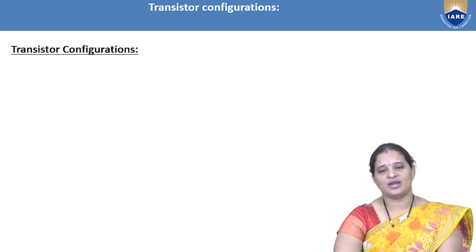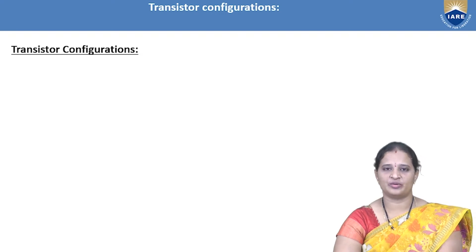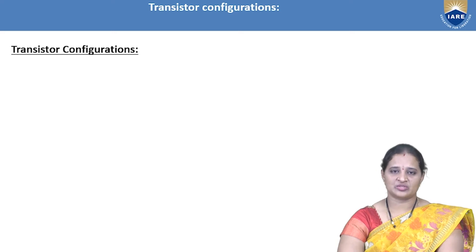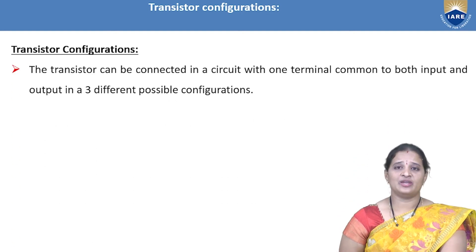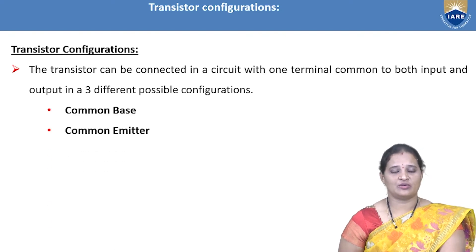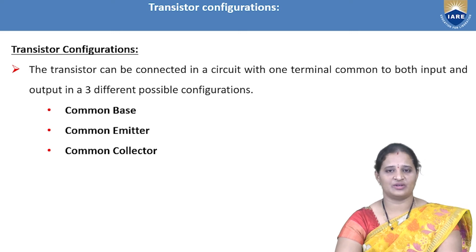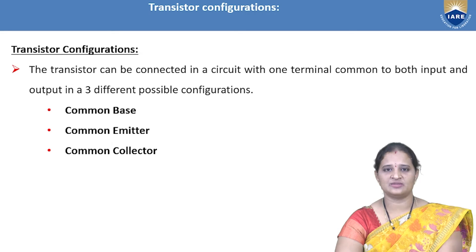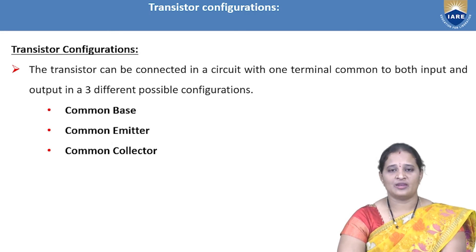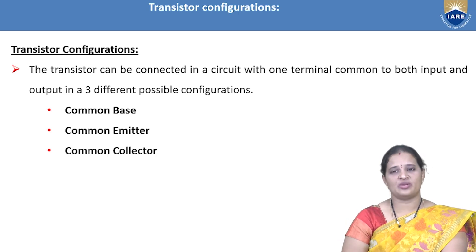We know that a transistor has three terminals, so we can approximate it as a two-port network where the two ports are the input port and output port. Since any one of the three terminals can be common between the input and output ports, we can have three types of configurations: common base, common emitter, and common collector configuration.